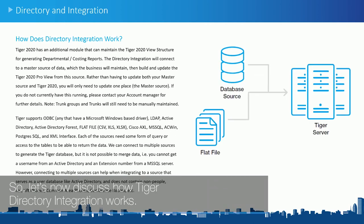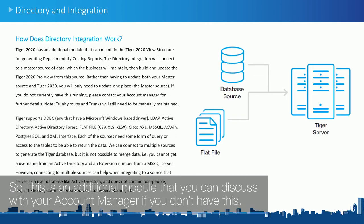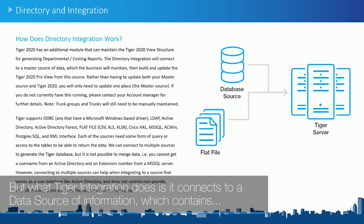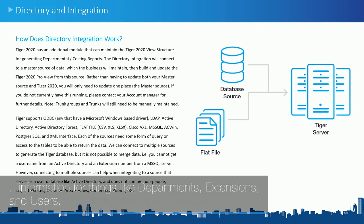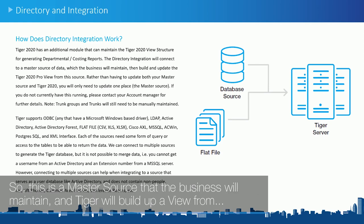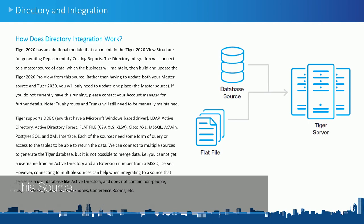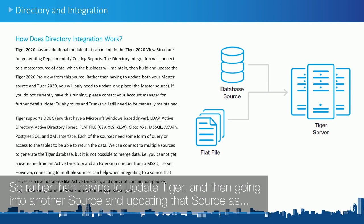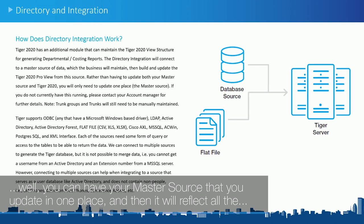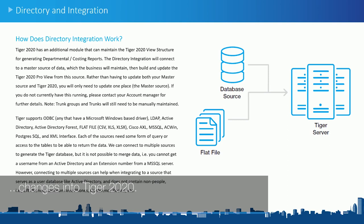Let's now discuss how Tiger directory integration works. This is an additional module you can discuss with your account manager if you don't have it. What Tiger integration does is connect to a data source of information which contains information for things like departments, extensions, and users. This is a master source that the business will maintain and Tiger will build up a view from this source — so rather than updating Tiger and then going into another source separately, you can have one master source and it will reflect all changes into Tiger 2020.